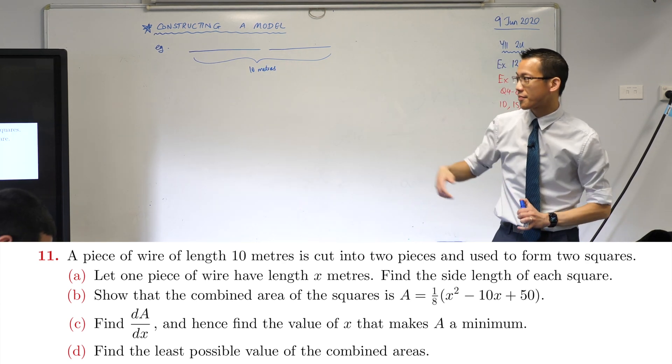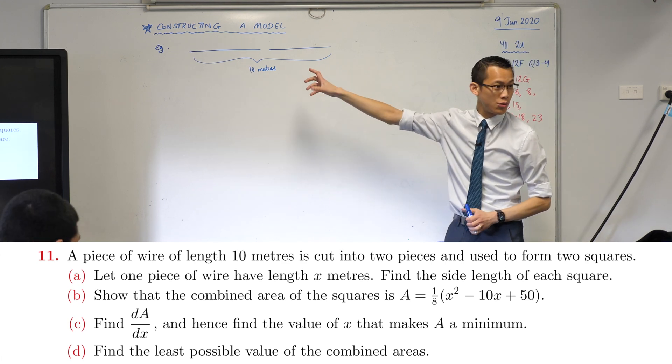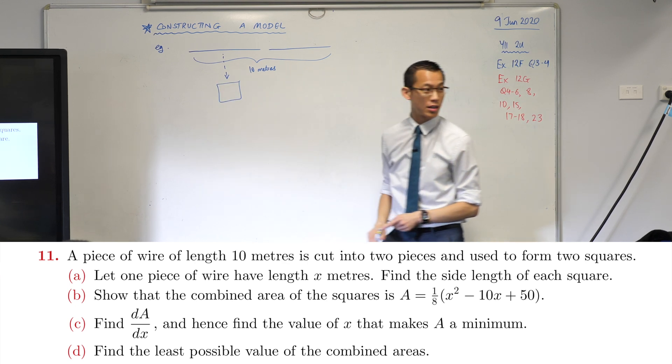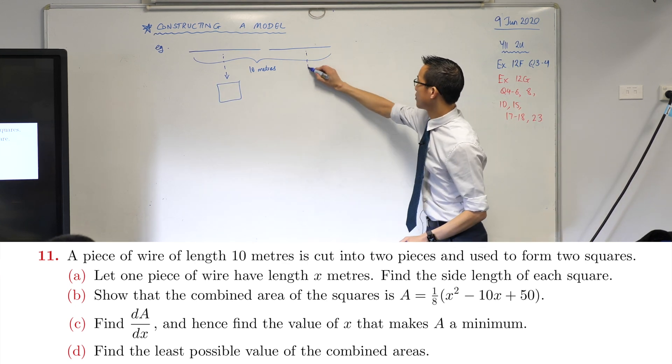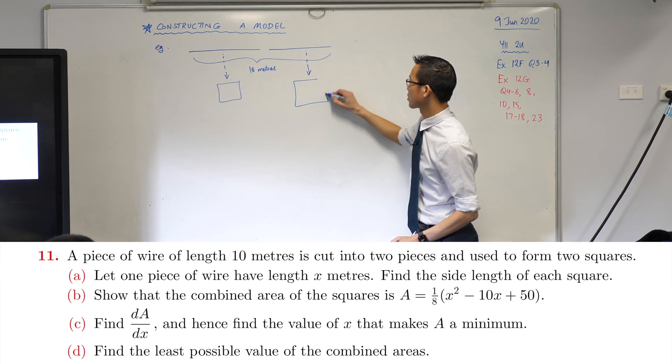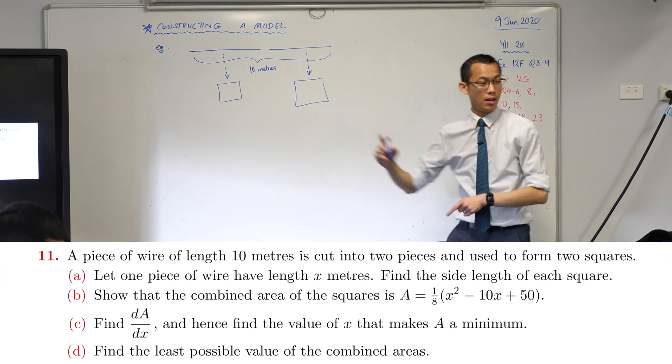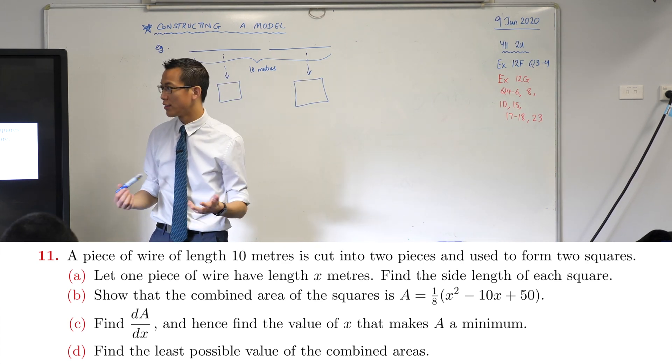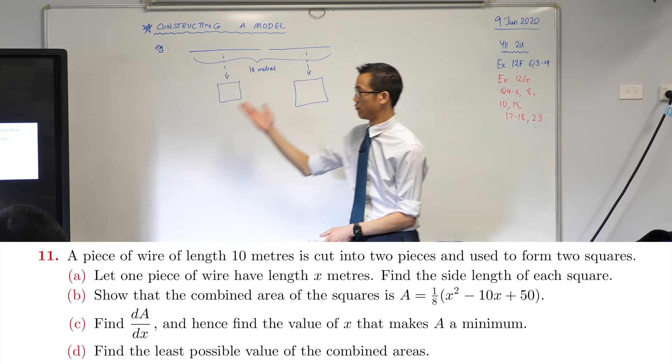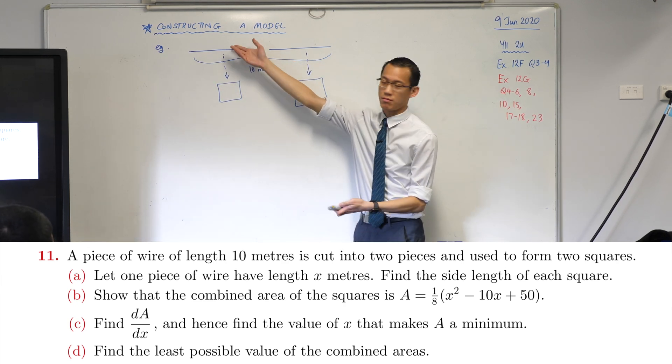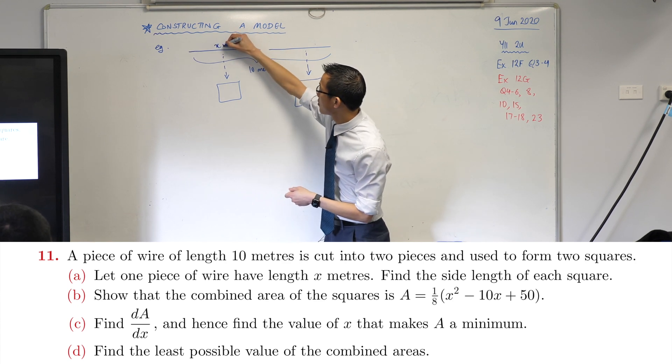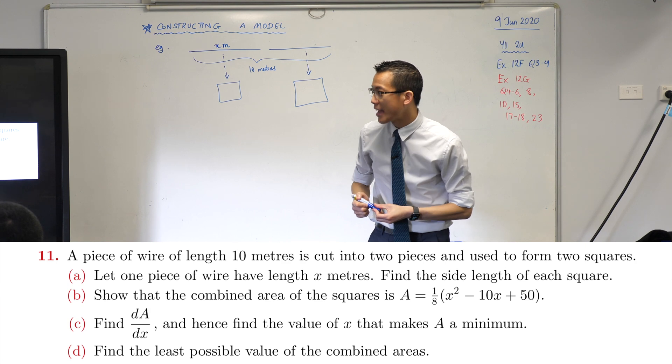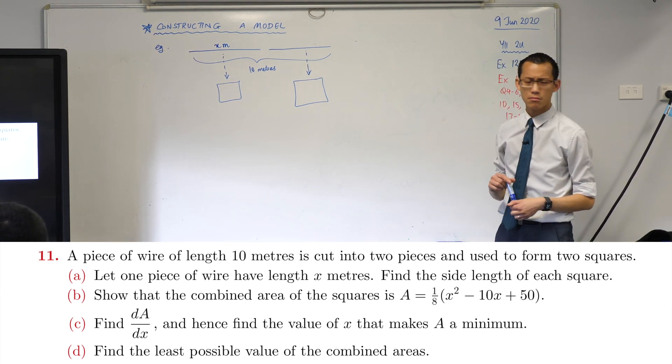Those two pieces get formed into two squares, so this is going to get turned into a square of some kind. This guy also gets turned into a square—maybe it's bigger, maybe it's smaller, I don't know. Let's keep going. It says let one piece of wire have length x meters, so I've got two pieces of wire here. I'll make the left-hand one x meters. Then they say find the side length of each square.